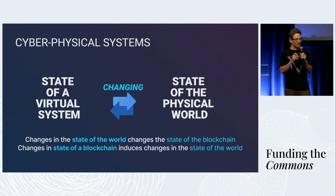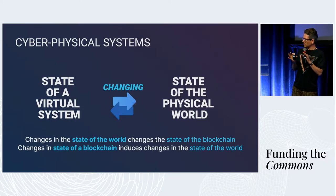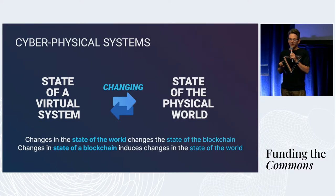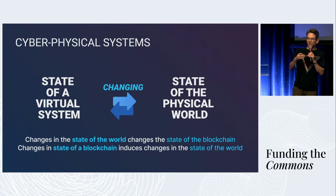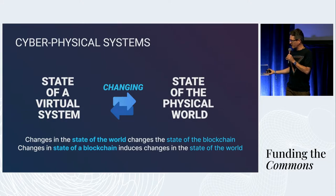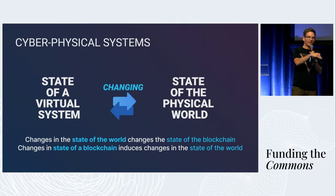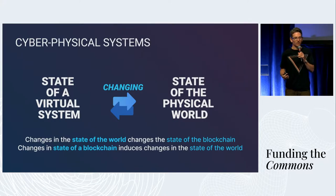With the state of the virtual system — the blockchain and its related technologies — reflecting or linked to the change in the state of the physical world. A very powerful idea here is that when changes in the state of the real world create changes in the state of the chain, and when changes in the state of the chain happen, they can feed back as incentives to get people to change the state of the world. This feedback loop is super important.